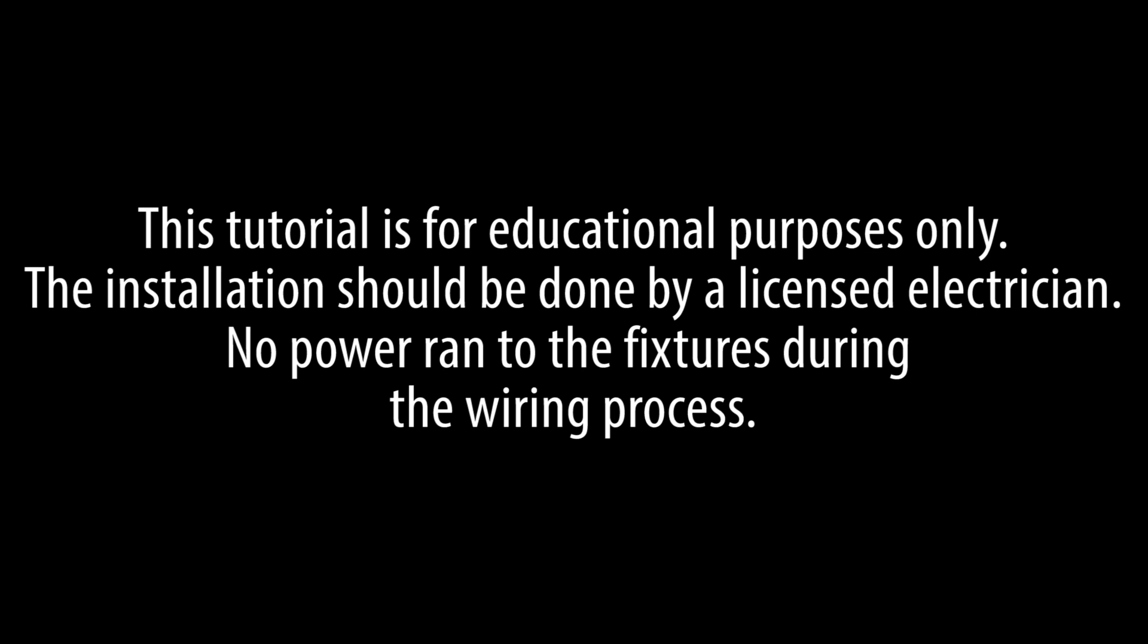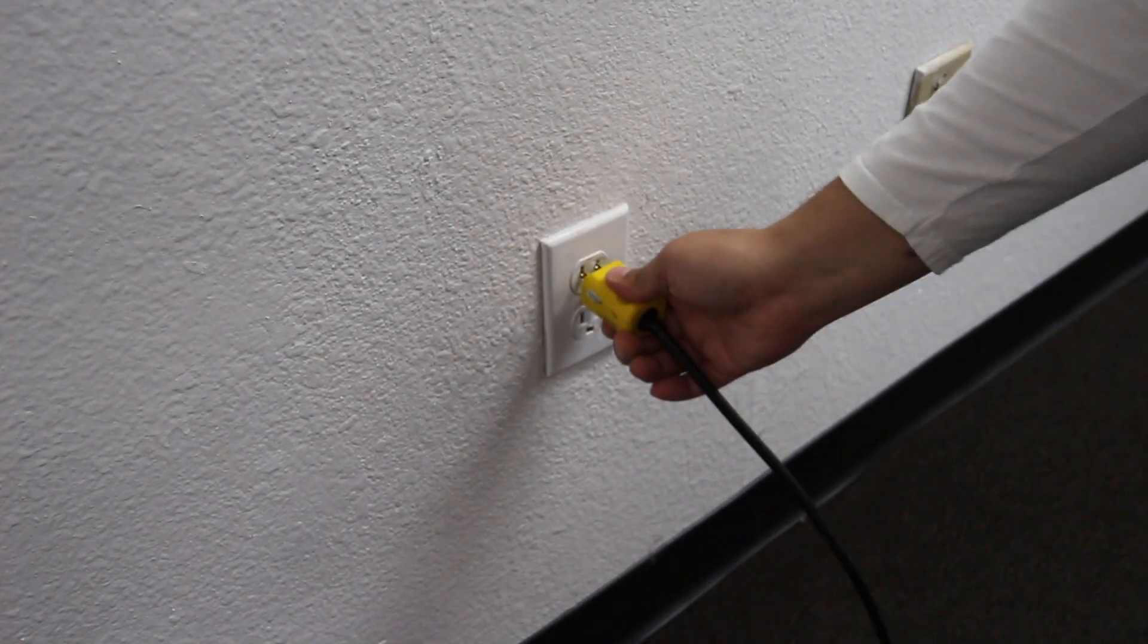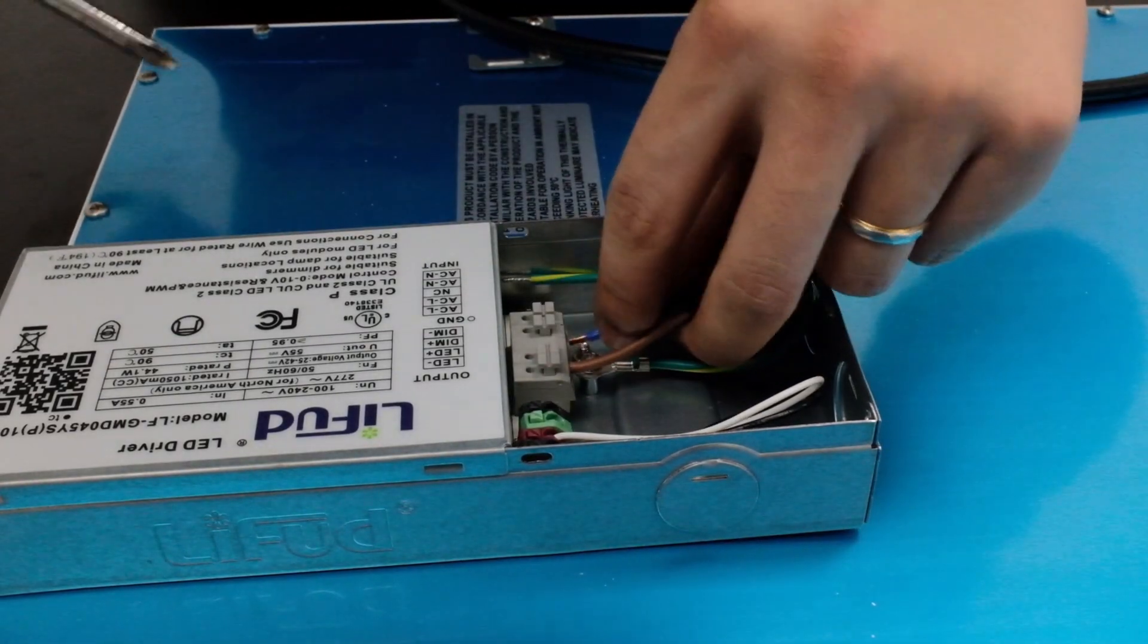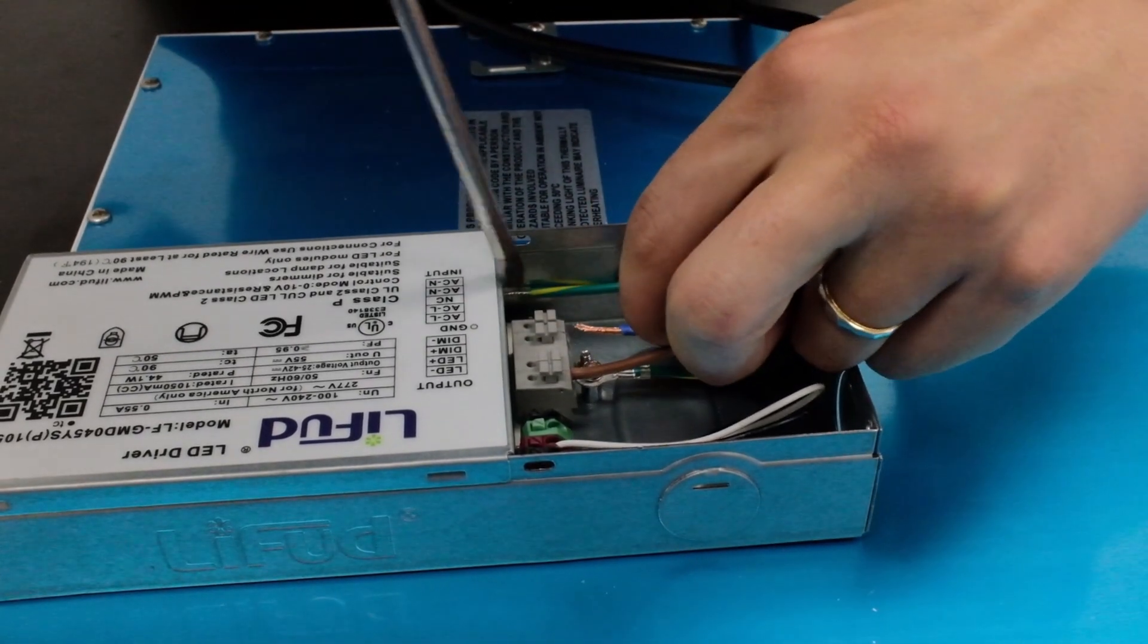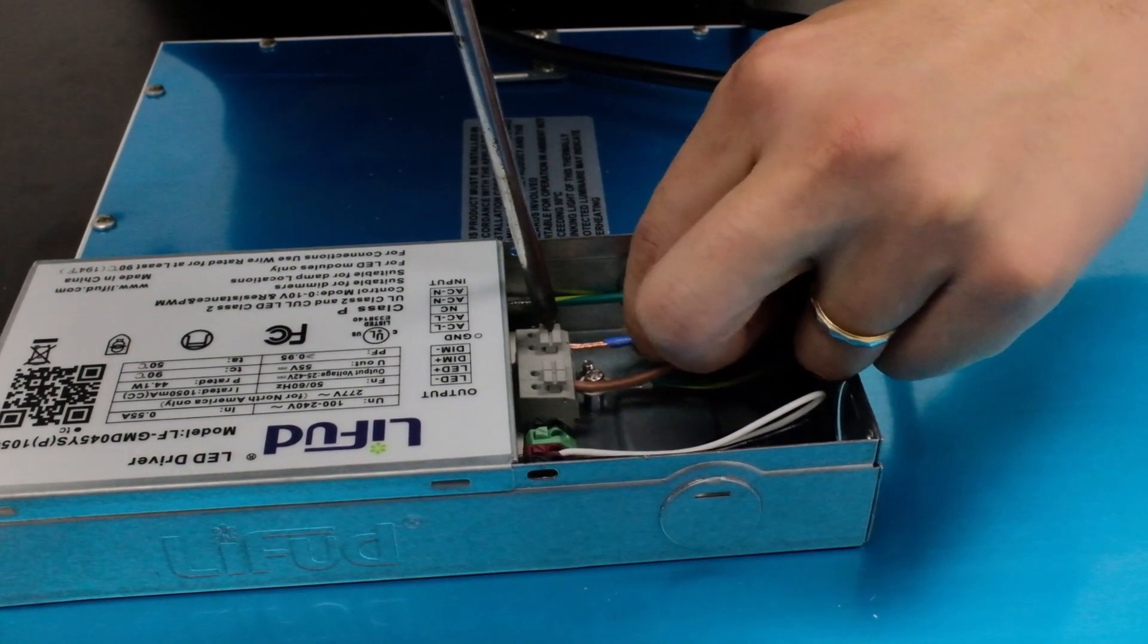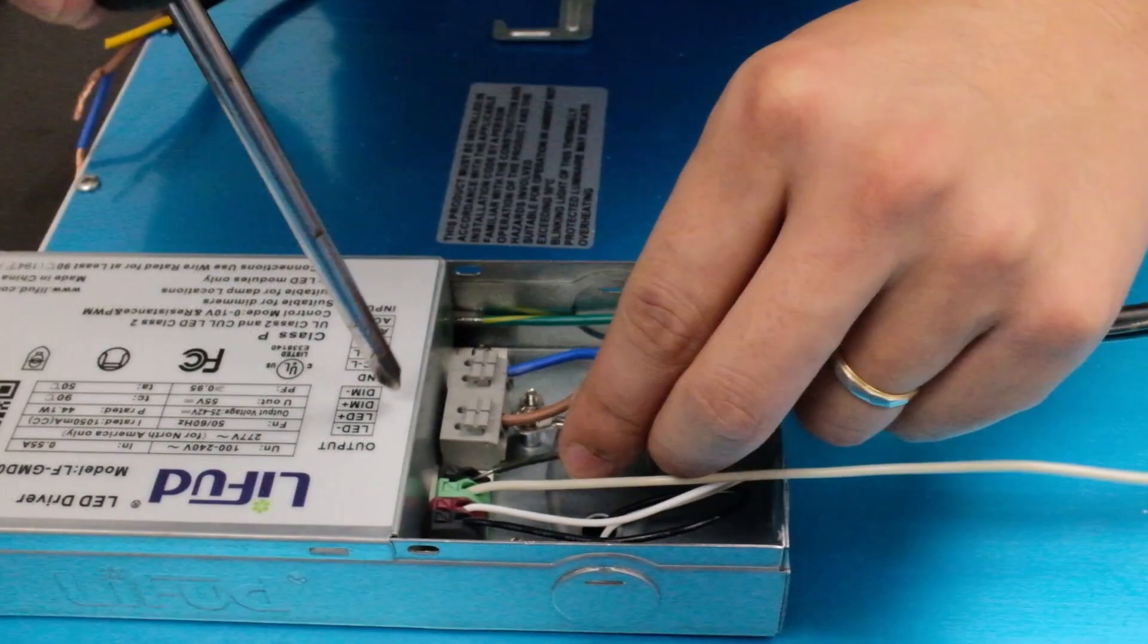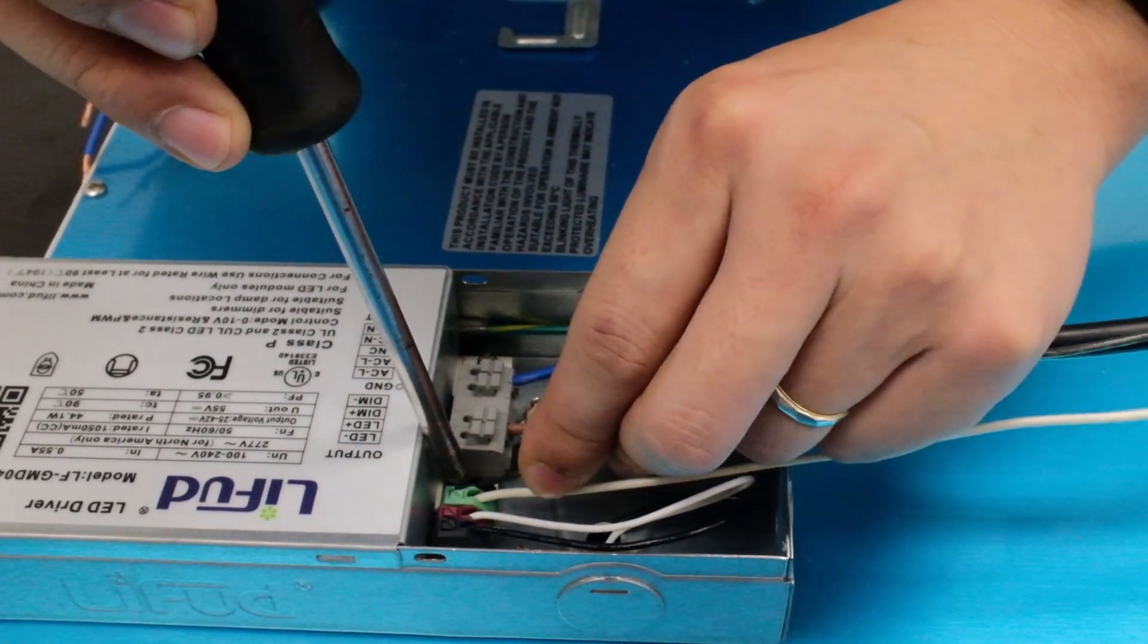This demonstration is for educational purposes only. Here we're using a wall jack as a power supply which will not come into play during your actual installation. For this demo, we also used extension wires and connected the live wire to the ACL input, the neutral wire to the ACN input, and the positive and negative extension wires to the respective dimming inputs.